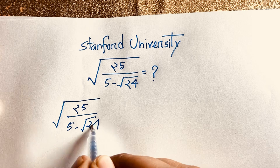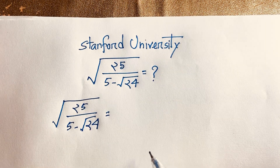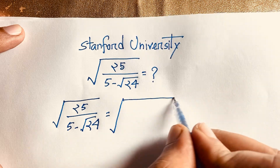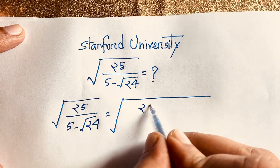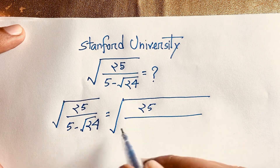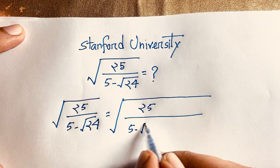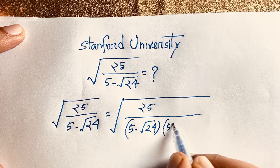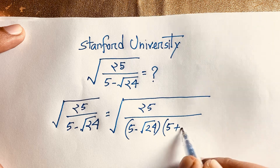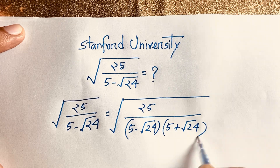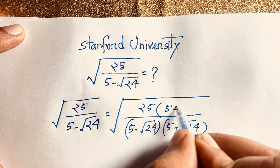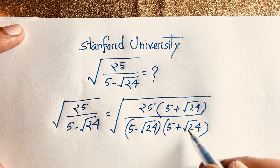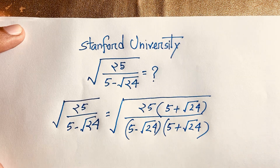Our question is square root of 25 over (5 minus square root 24). To simplify this expression, I multiply the numerator and denominator by the conjugate: (5 plus square root 24) over (5 plus square root 24). If we cancel out, we return to our previous line.